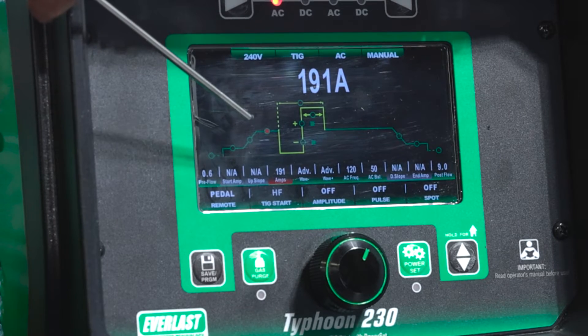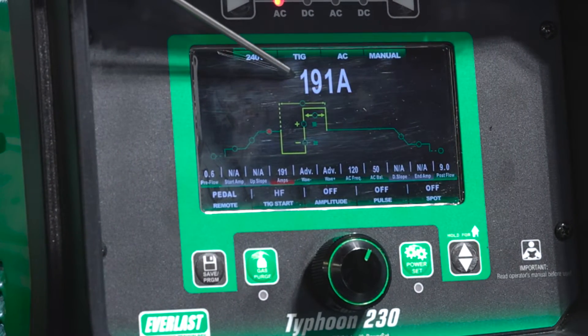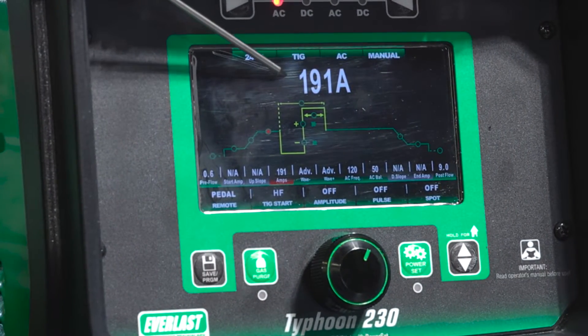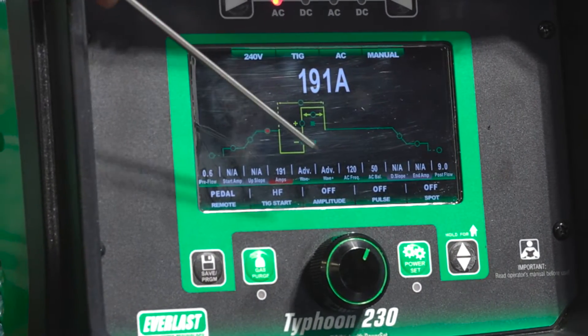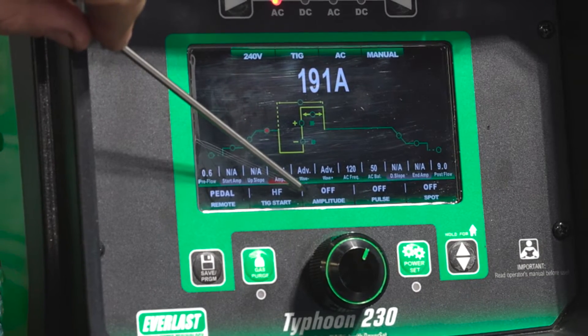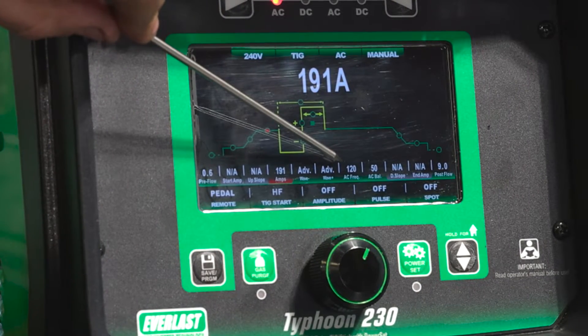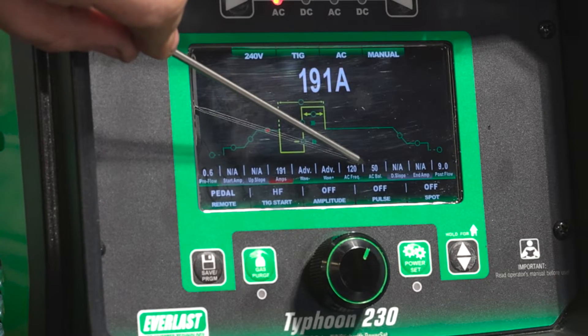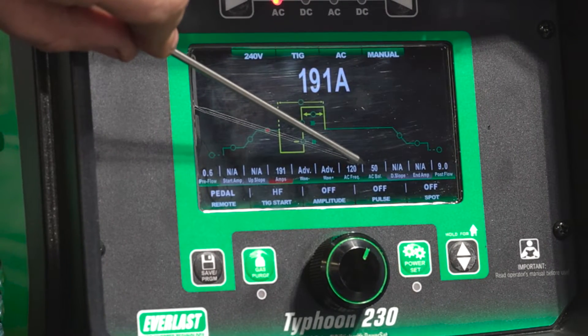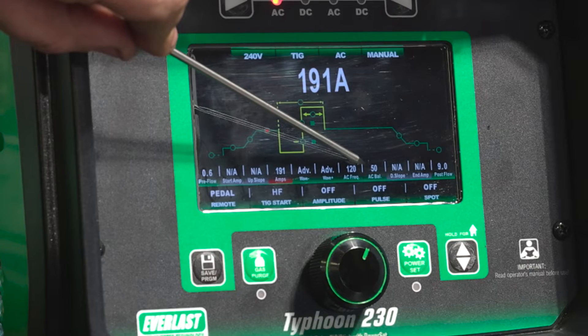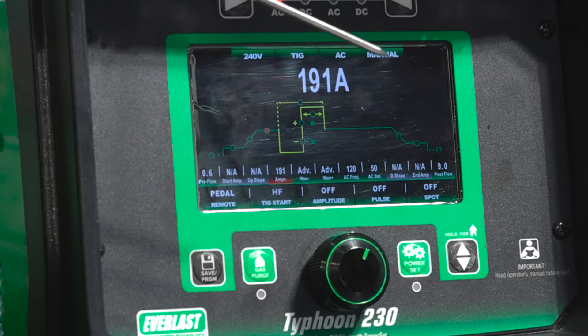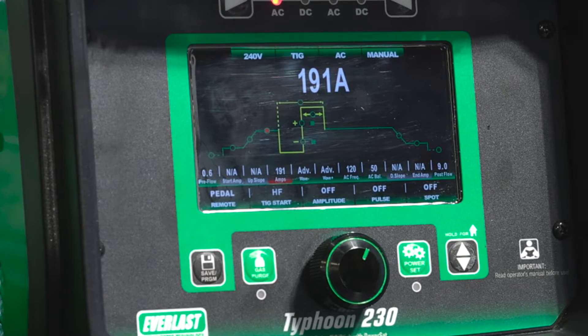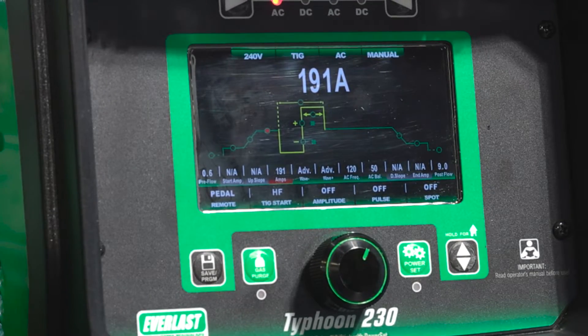So here we are on our Typhoon 230. To match our drawing, we've set our machine amperage at 191 amps. I'm superstitious with the ones. You can see our independent amplitude is off, we're running 120 hertz and 50% balance. Normally I wouldn't run 50% balance, but we want to have a control variable. To make all things equal, we're going to run 50% balance to show you the power of independent amplitude. Let's go ahead and make this equal EN EP run and we'll see the results.